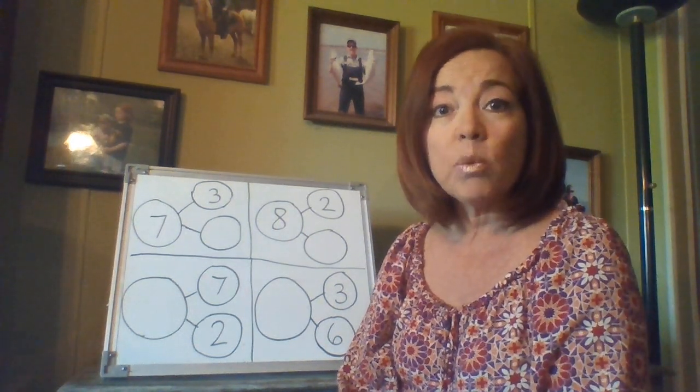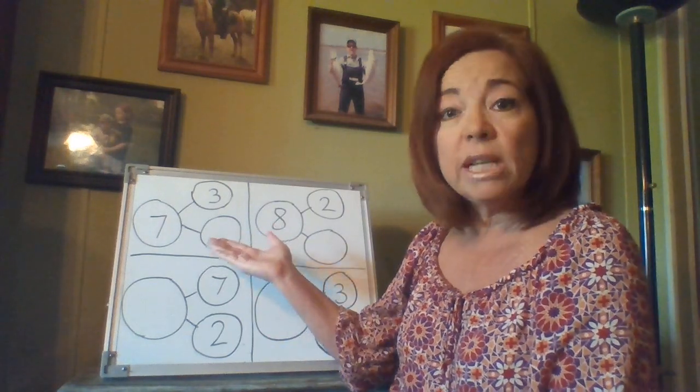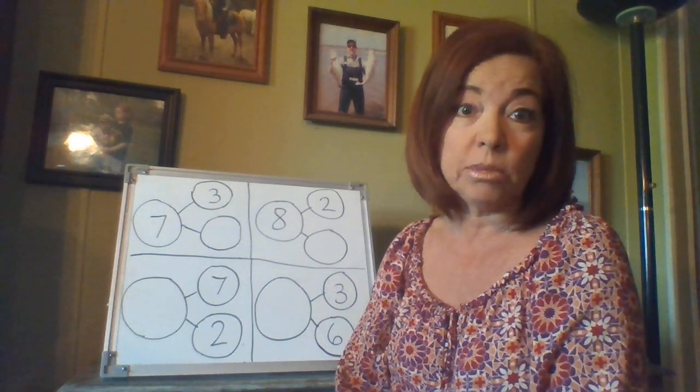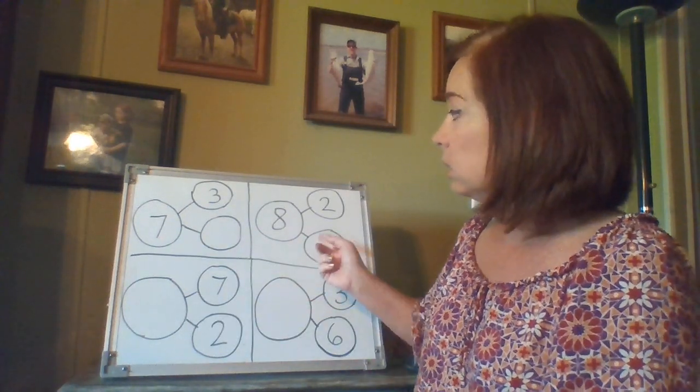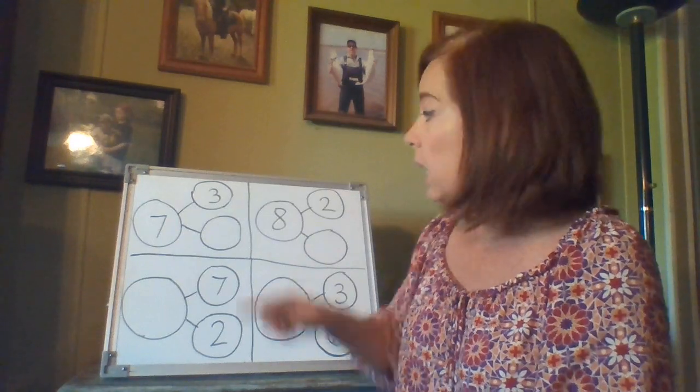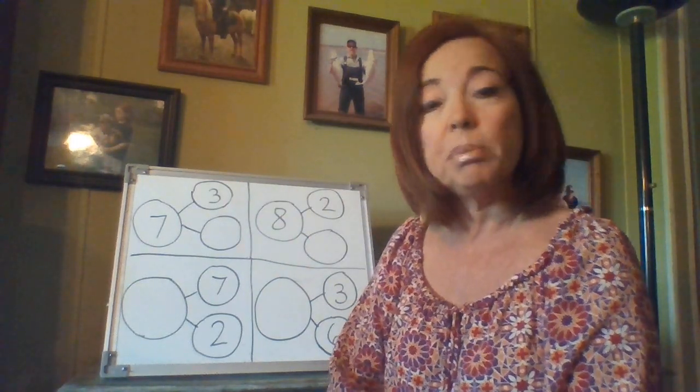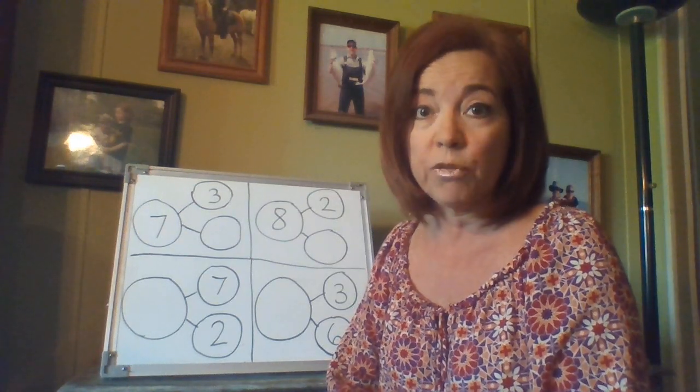Hello boys and girls. Today we're going to learn about number bonds. As you can see, today's number bonds already have some numbers in it and some of them are left empty. Normally we have a number in the big one that we call the whole and the two parts are left empty. But sometimes you get part of the information but not all of the information.